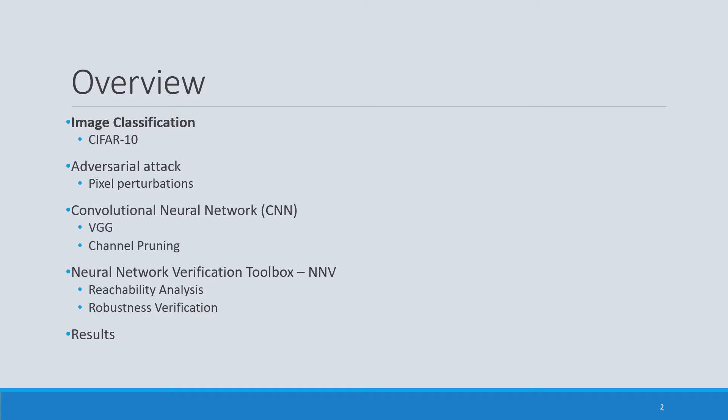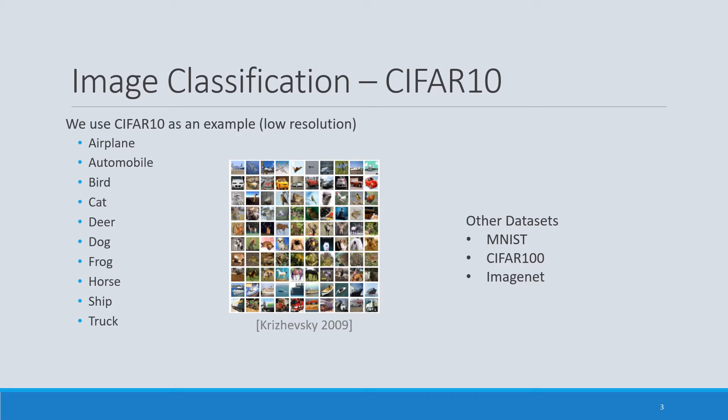Let's start with the image classification task. We get an image as input through the neural network and we need the neural network to output the specific class that the image corresponds to. In this case we have 10 labels — airplanes, automobiles, etc. — and we want to make sure that even under certain perturbations to the original image, our neural network can correctly classify an airplane as an airplane. We chose the CIFAR-10 dataset for no specific reason; we could have used MNIST, CIFAR-400, or ImageNet, and may consider some of these in the future.